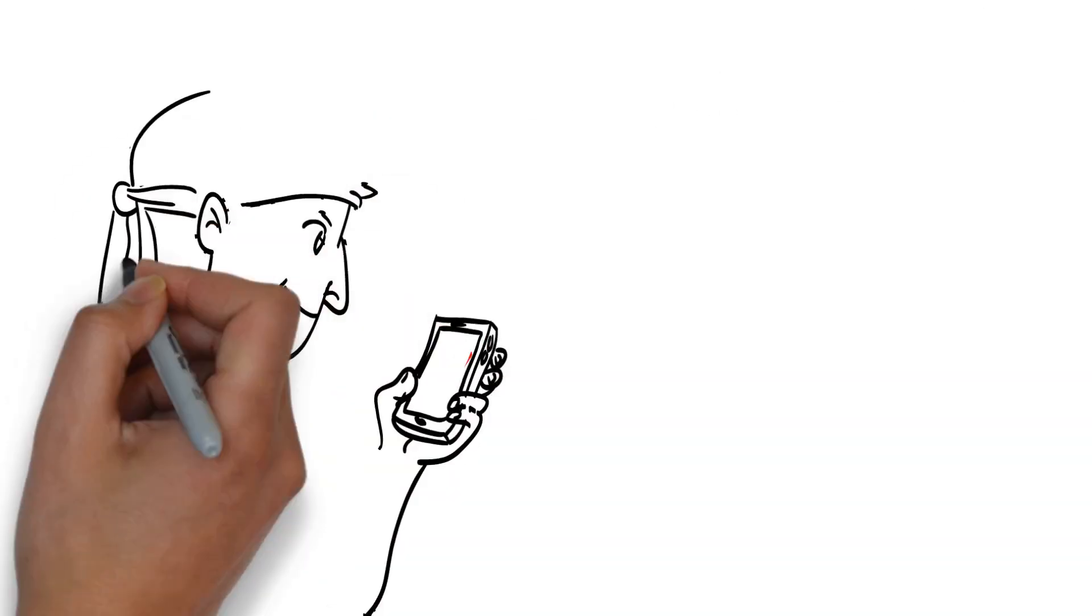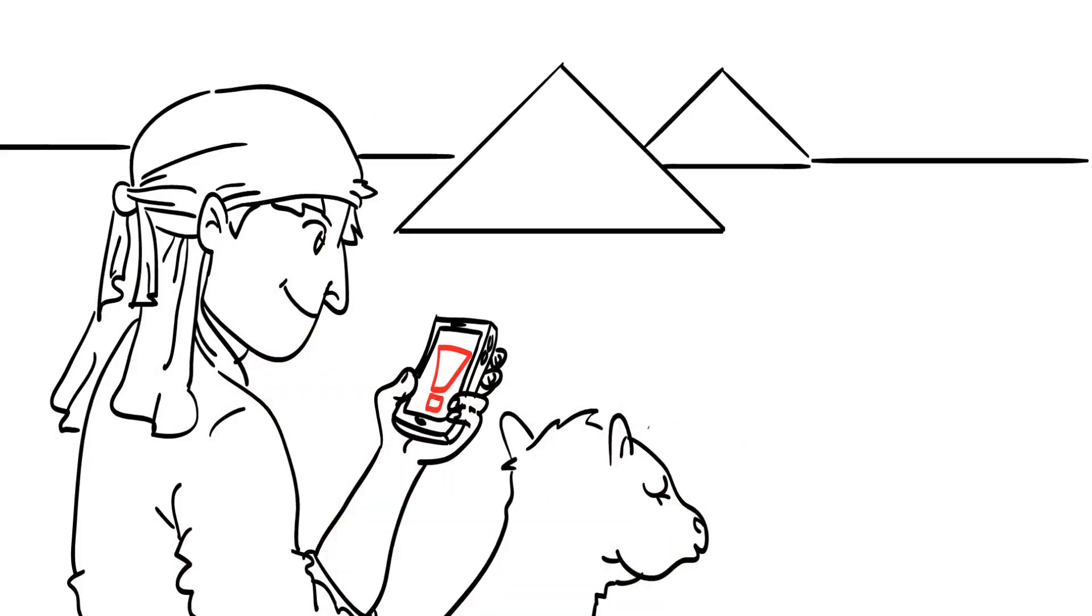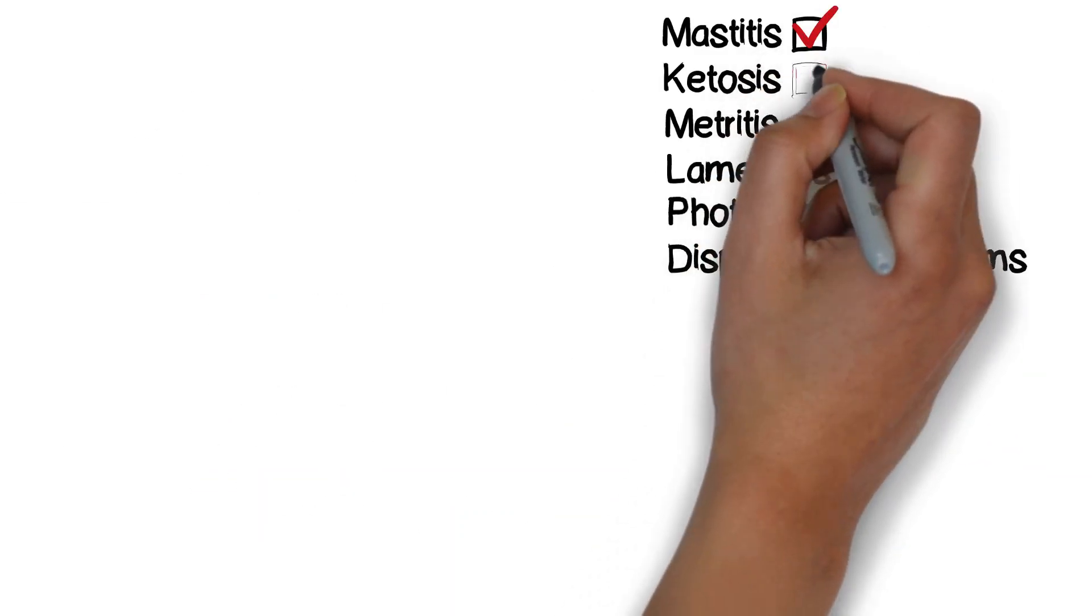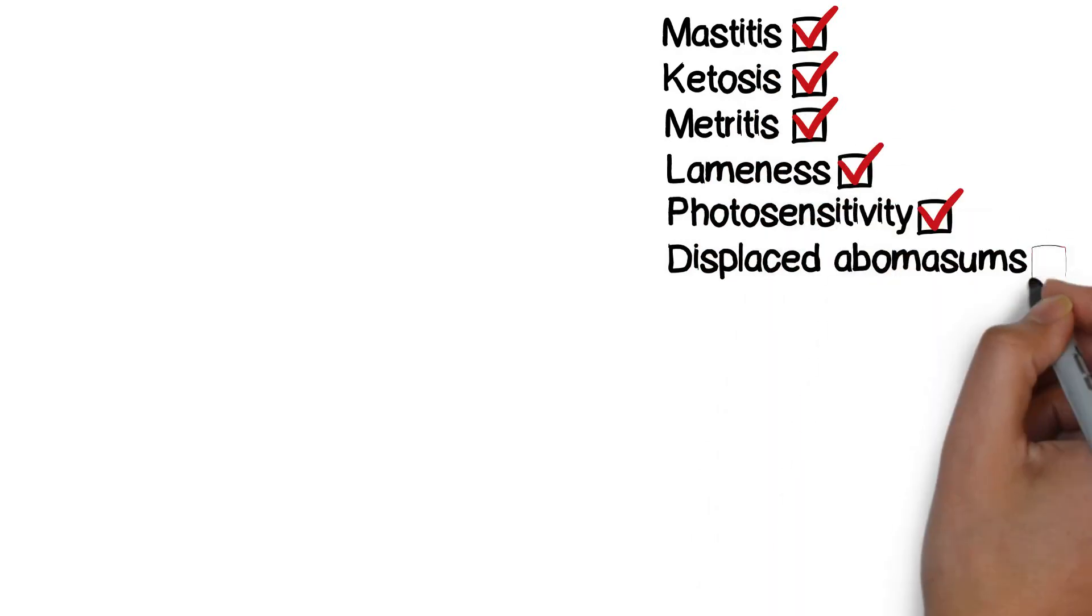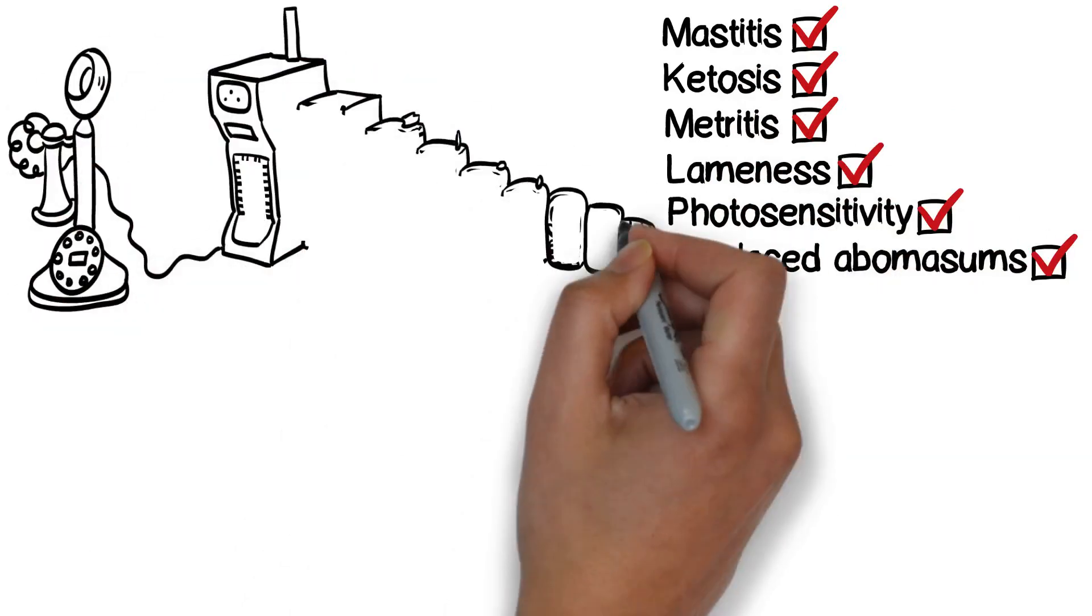Herd Insights is a cloud-based technology and as such can be accessed anywhere in the world. Whilst a single metric, such as activity, might have been good enough years ago, just like the phone, technology has moved on.